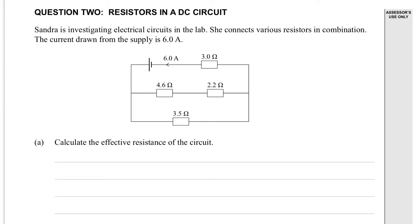2014 Level 2 Electricity Question 2: Resistors in DC circuits. Sandra is investigating electrical circuits in the lab, connects various resistors in combination. You can see in the diagram the current drawn from the supply is 6.0 amps. Calculate the effective resistance of the circuit.